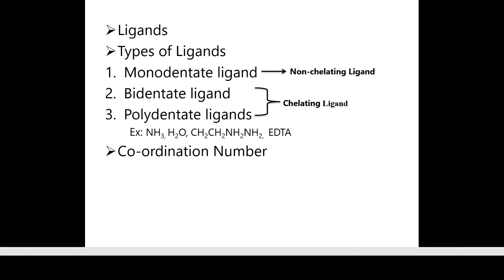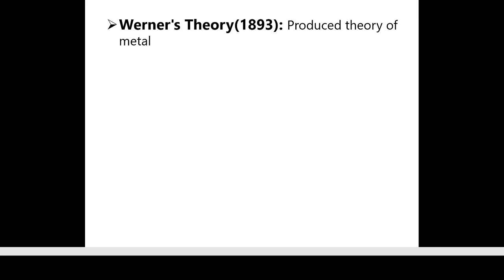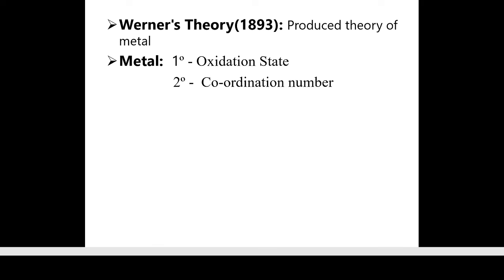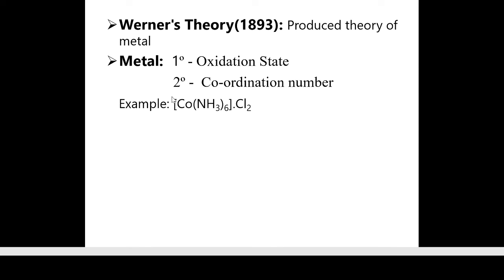The next concept is coordination number. The coordination number is simply the number of ligands attached to the central metal atom. In 1893, Werner produced a theory of metals in which he explained primary and secondary valency. According to Werner, primary valency is nothing but oxidation state, and secondary valency is nothing but coordination number.